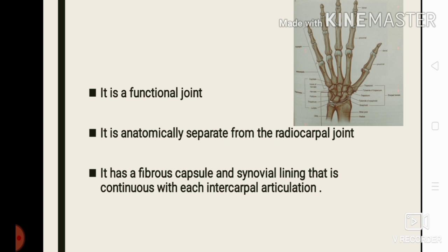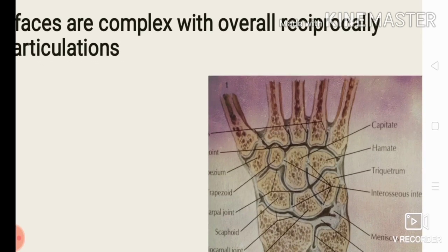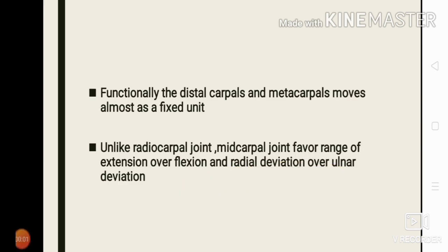The midcarpal joint is a functional joint rather than an anatomical unit, because it doesn't form a single uninterrupted articulating surface — that means the articulating surface is not continuous. It is anatomically separated from the radiocarpal joint. It has a fibrous capsule and synovial lining that is continuous with each intercarpal articulation and may be continuous with some of the carpometacarpal joints. The midcarpal joint surfaces are complex, with reciprocally concave-convex articulation — if one surface is convex, the opposing surface will be concave.